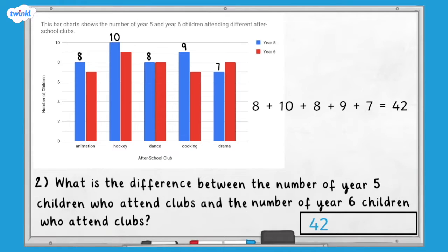Eight add ten, add eight, add nine, add seven equals 42. Forty-two year five children attend after school clubs.